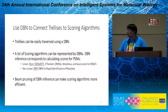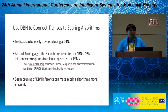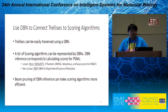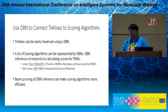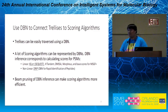First, trellises can be very easily traversed using a simple DBN model, as we will show later. Second, many scoring functions can also be very easily represented by DBNs, and the DBN inference will generate exactly the same score as the original scoring functions. Specifically, we will show how to write the XCorr or Sequest scoring function as a DBN model, which could potentially be generalized to many more scoring functions. Finally, as we are using DBN inference, we benefit from efficient DBN inference techniques, specifically the beam pruning technique, which could make the scoring procedure even more efficient.